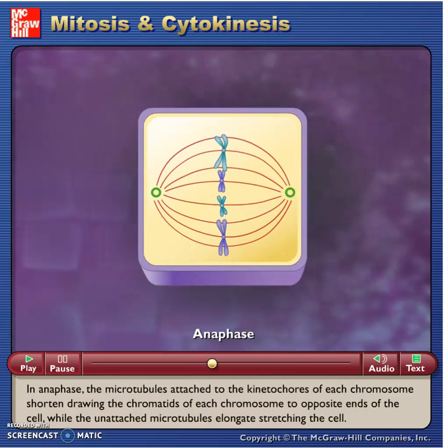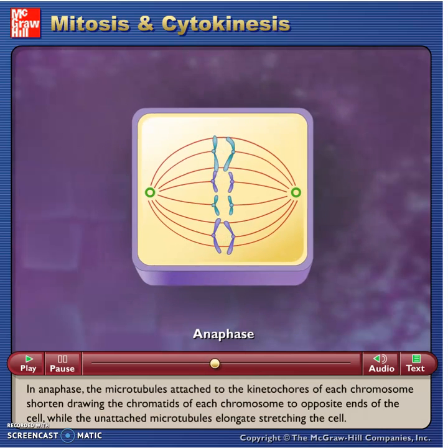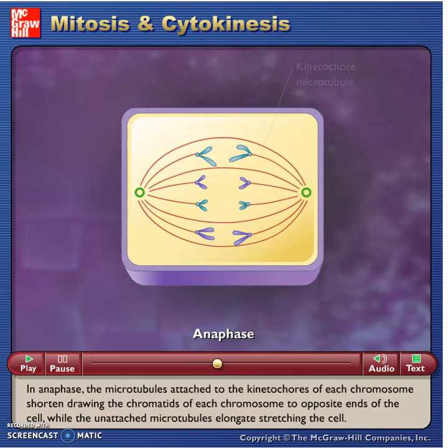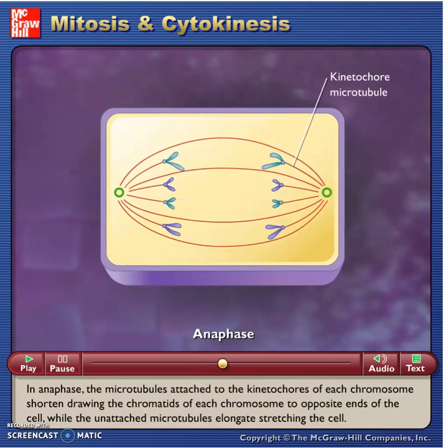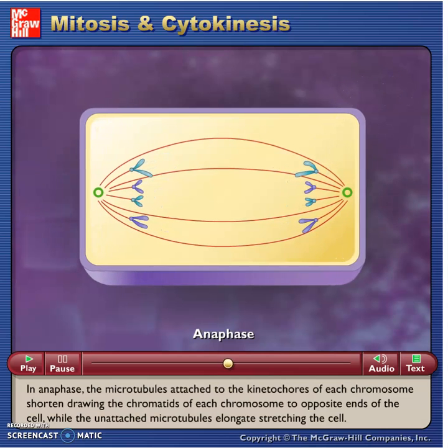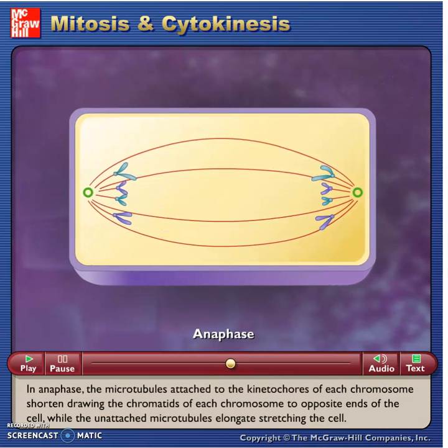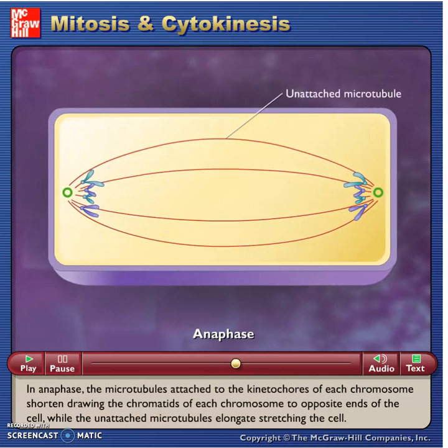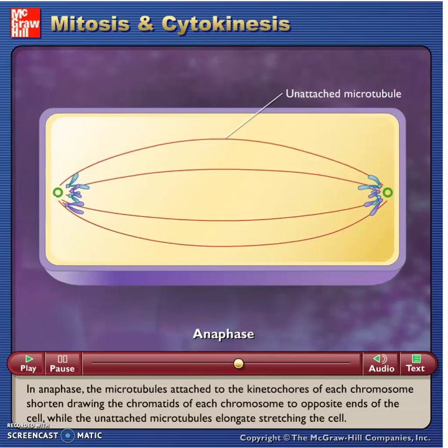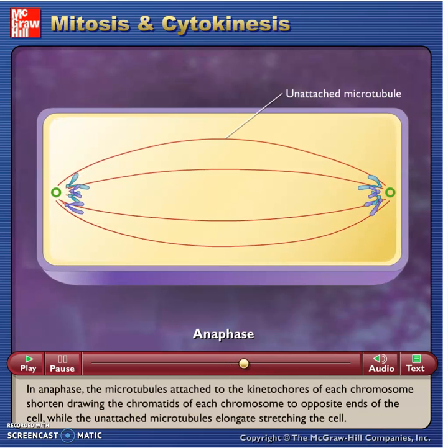In anaphase, the microtubules attached to the kinetochores of each chromosome shorten, drawing the chromatids of each chromosome to opposite ends of the cell, while the unattached microtubules elongate, stretching the cell.